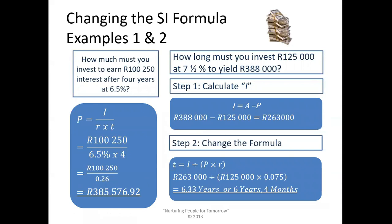Let's have a look at how the simple interest formula can be changed in a test or an exam. And these are the typical questions that you will then get. It says, how much must you invest to earn a 100,250 rand interest after four years at 6.5%? So what you have here, you make the principle, the subject of the formula. You were given the interest. You were given the rate. You were given the time. So you can simply replace the values and you can get your answer.